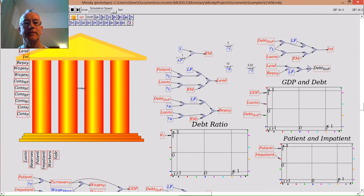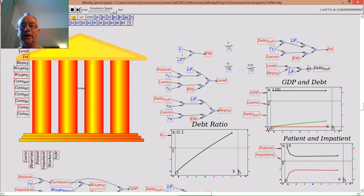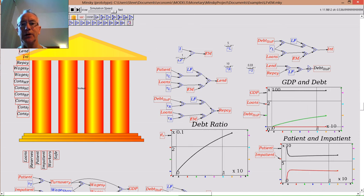Now, if I run the model, notice the GDP here is a total flat line while debt is rising, and the debt ratio is rising as the lending from patient to impatient agent goes on.